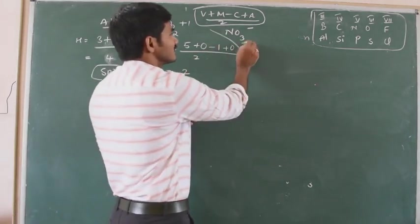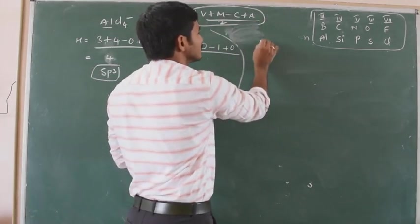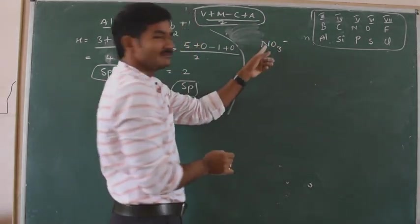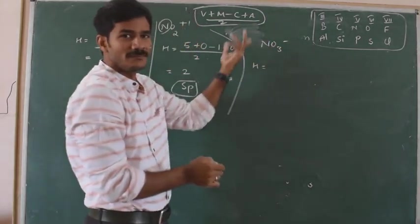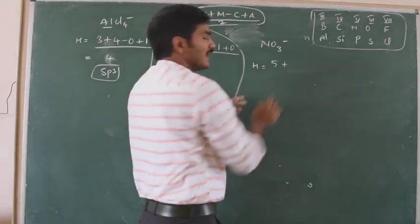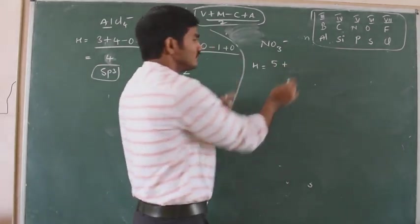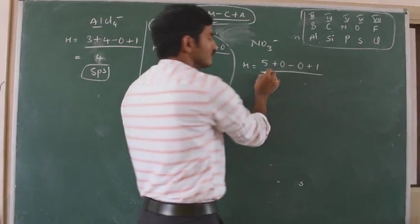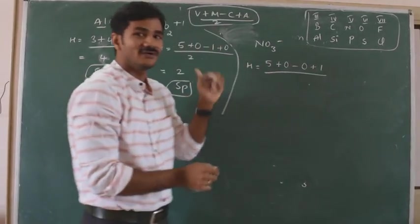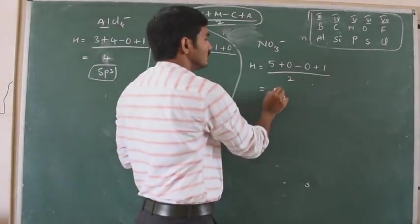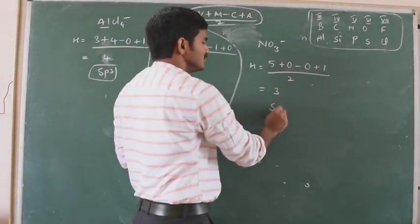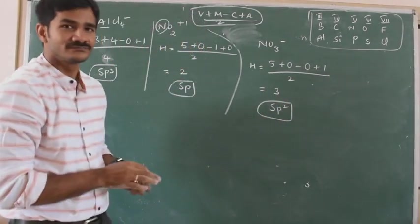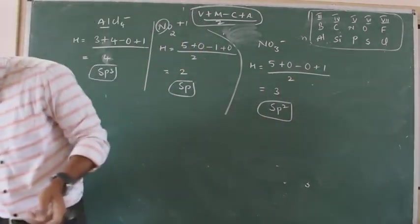If you take NO3 minus: H equals central atom nitrogen, group number 5. Monovalent atoms — zero. Cation charge — zero. Anion charge is 1 (it is minus 1, but take 1 without the sign). So (5 + 0 − 0 + 1) / 2 = 6 / 2 = 3. Three corresponds to SP2 hybridization.